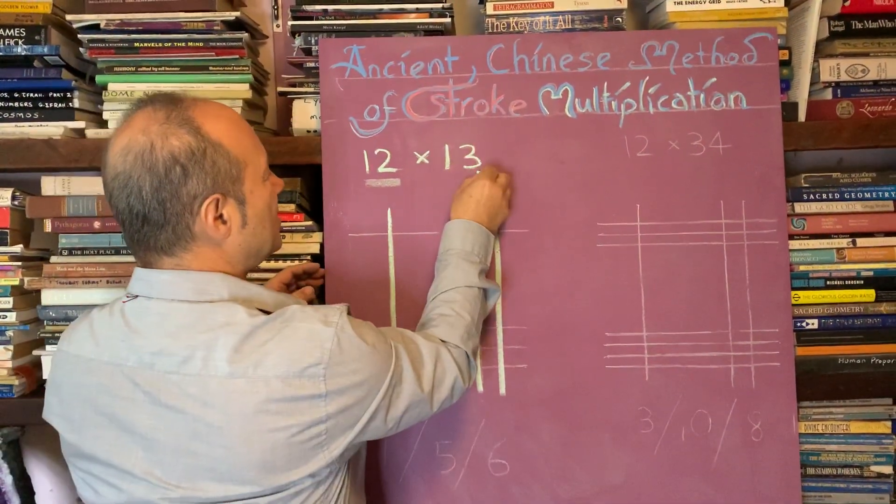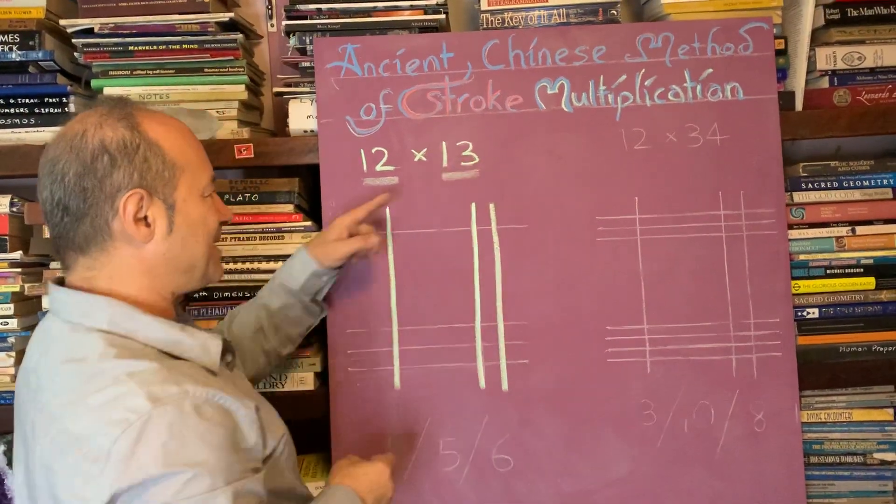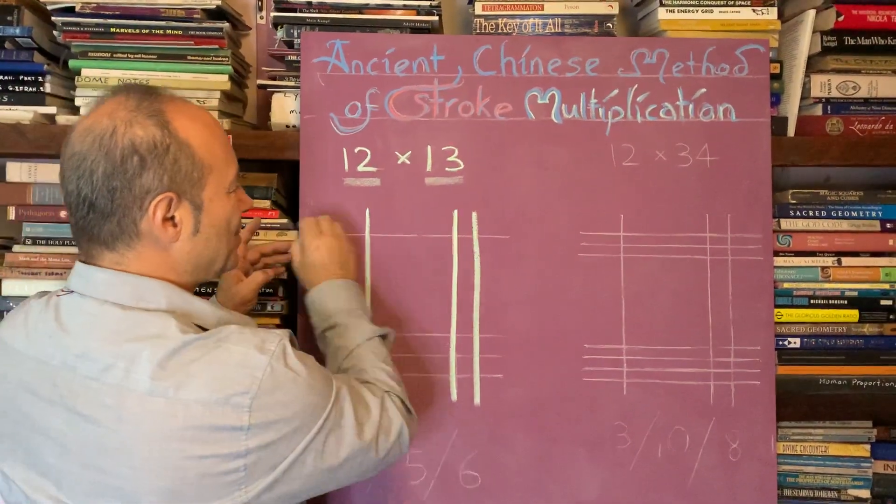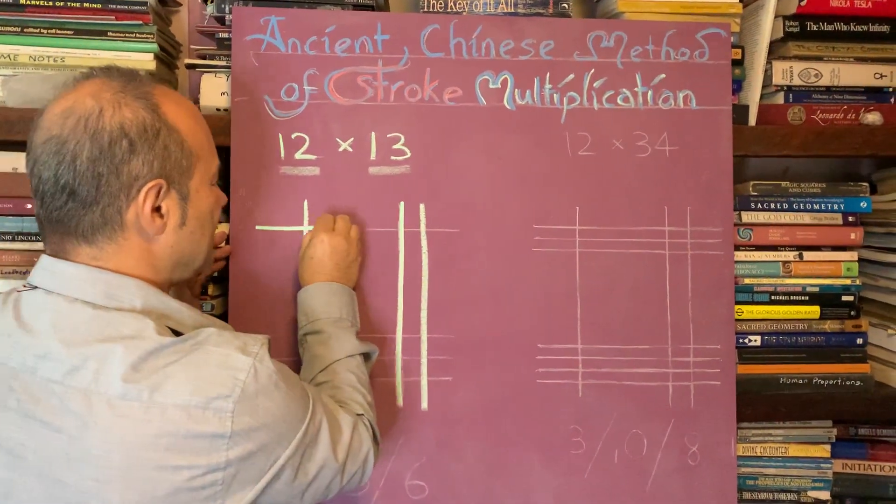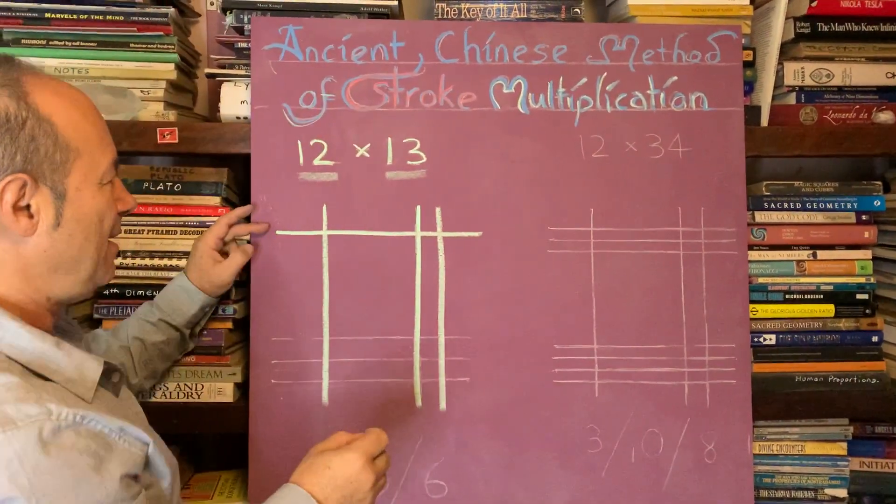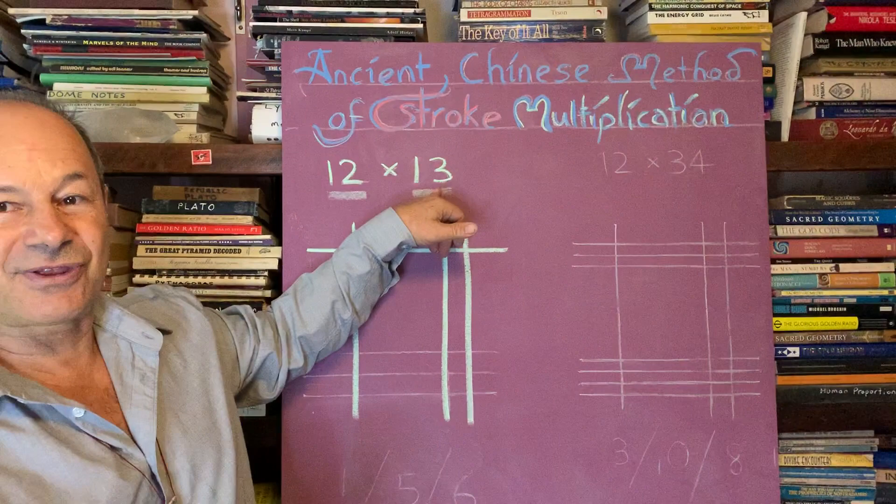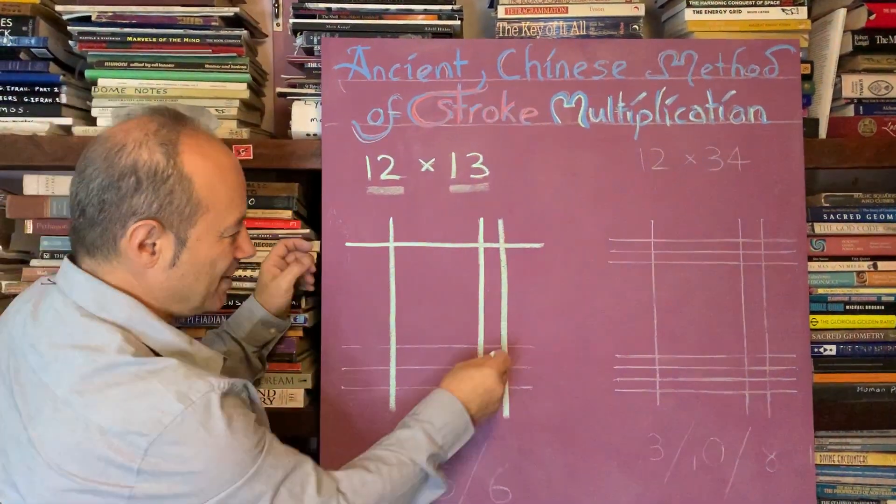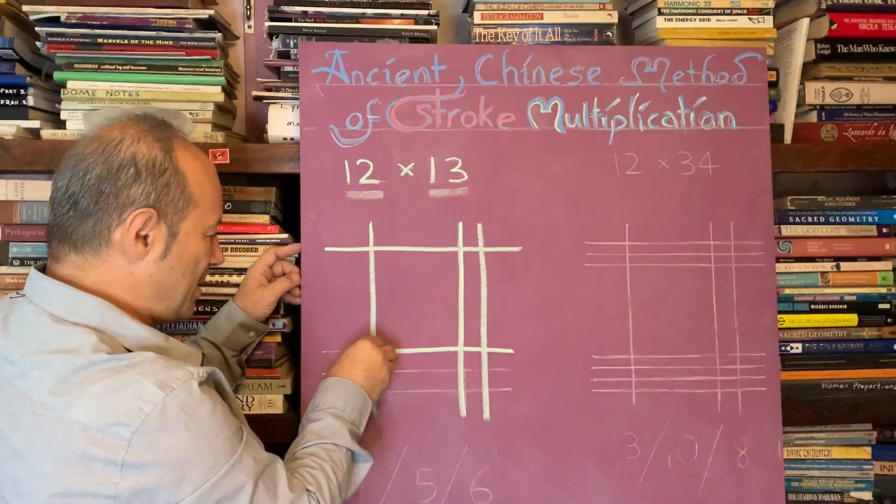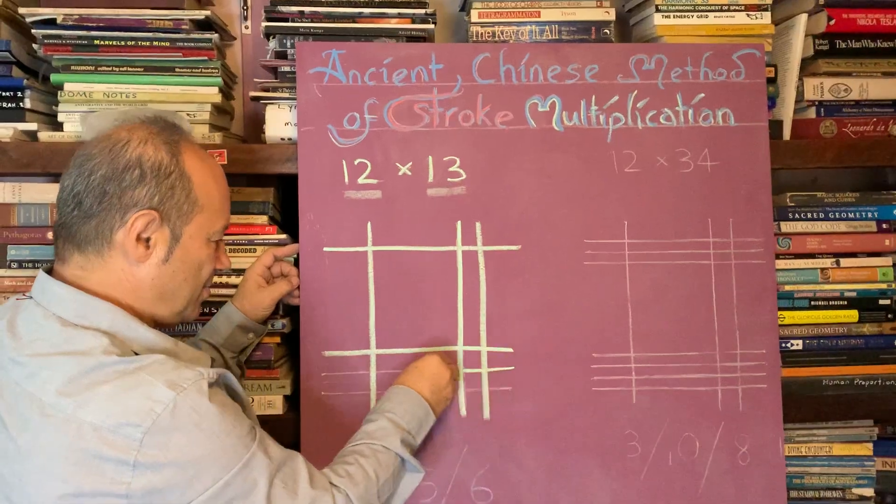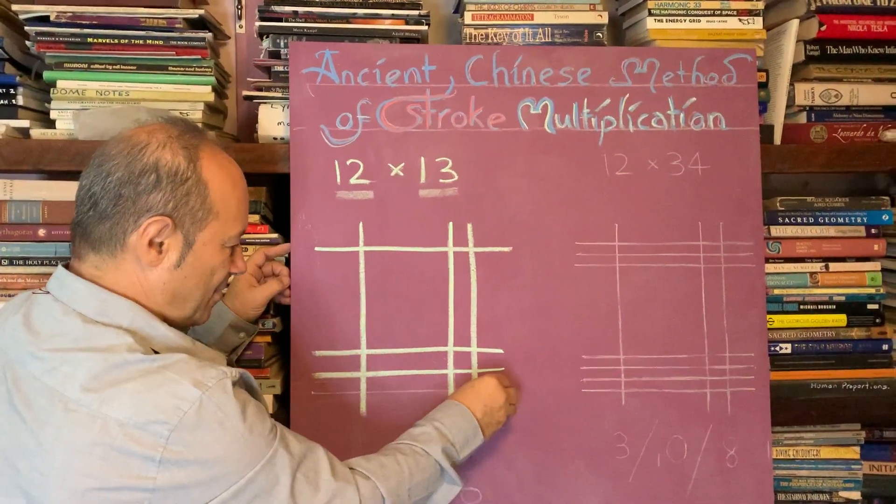We're multiplying 12 by 13. So this time I'm going to put the 10 going at 90 degrees across there. So if that's 10, we obviously need another three bars to represent the 13. So I'll just do one, two, three.